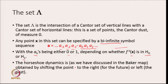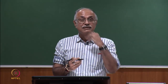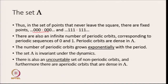Any point in this set can be specified by an infinite symbol sequence ...a_{-2} a_{-1} a_0 a_1 a_2... where each a_k is either 0 or 1, depending on whether f^k of x is in h0 or h1. The same kind of symbolic dynamics we discussed for the Baker map applies here: shifting right for the future or left for the past. There are fixed points 000... and 111..., an infinite number of periodic orbits corresponding to periodic sequences of 0 and 1, and periodic orbits are dense in lambda.